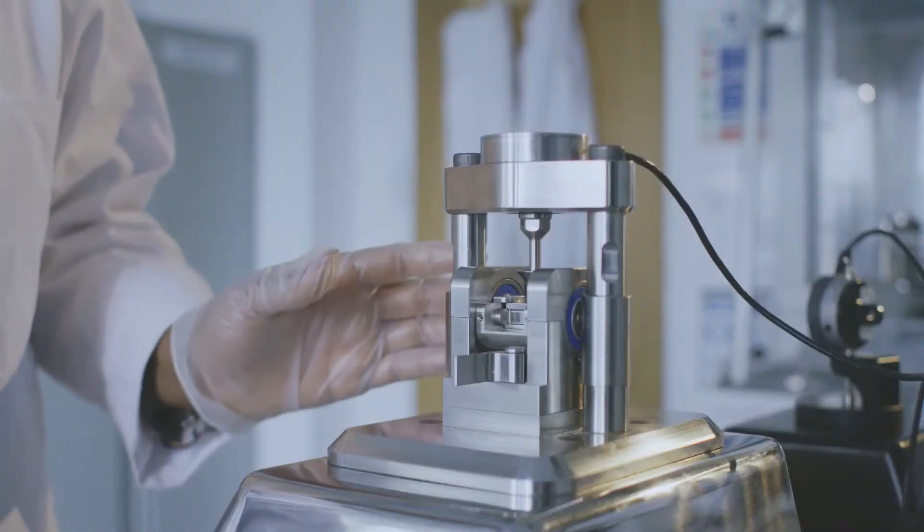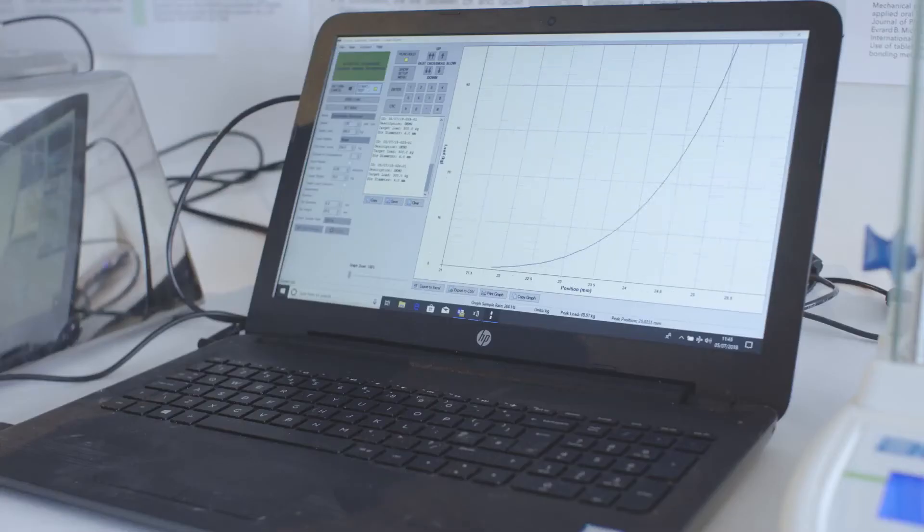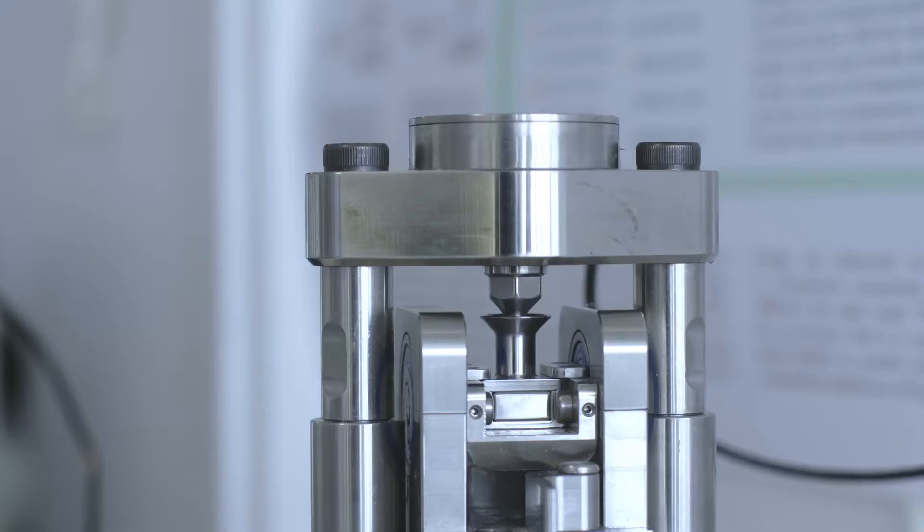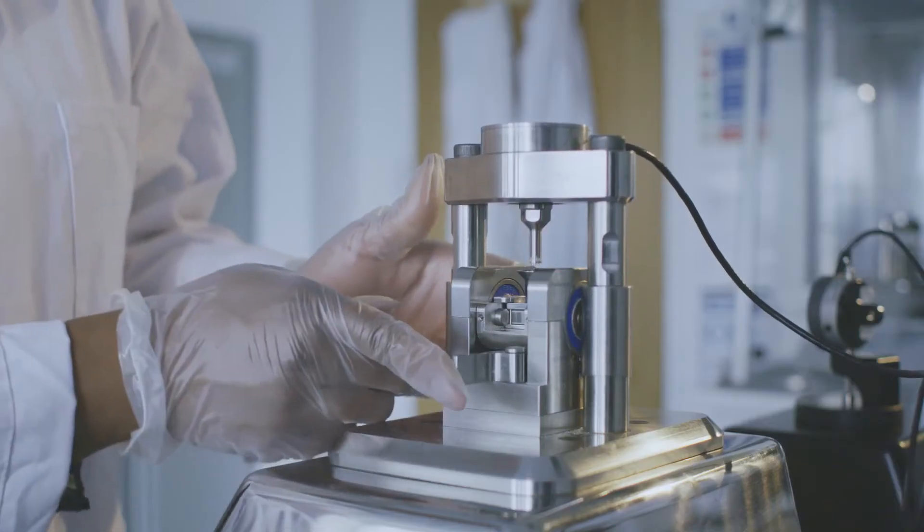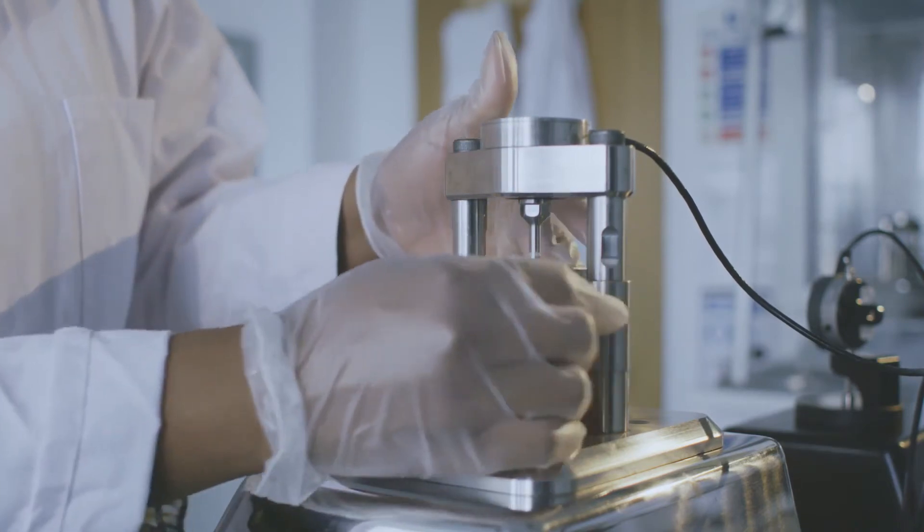The Gamlin system tests the compaction properties defined by the new USP1062 Tablet Compaction Characterisation Monograph, as well as checking the lubrication and the elastic properties of the sample.